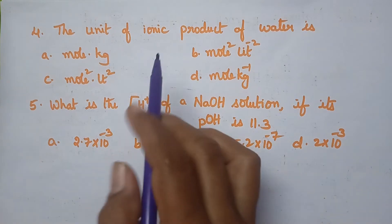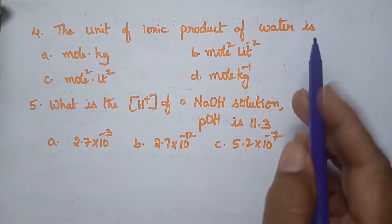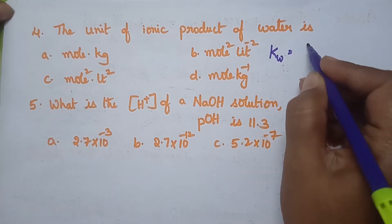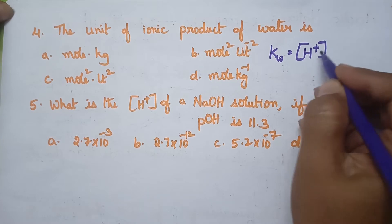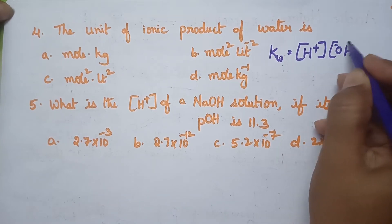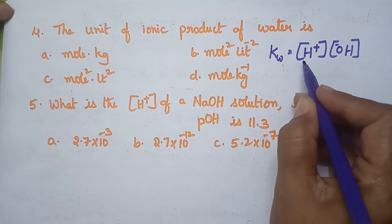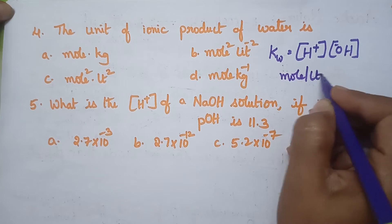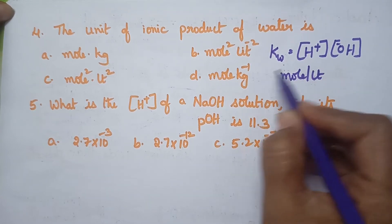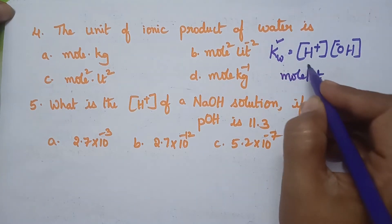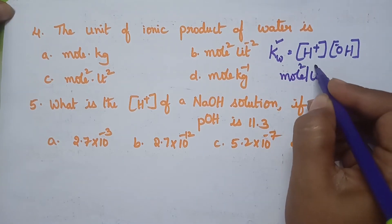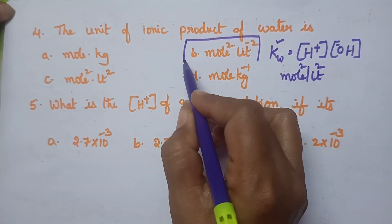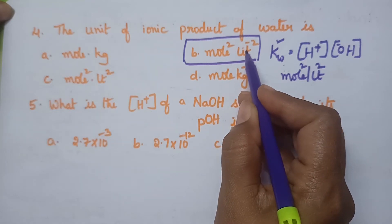The unit of the ionic product of water: the ionic product of water, Kw, can be written as the molar concentration of H⁺ and OH⁻ ions. The concentration of H⁺ can be expressed in terms of moles per liter. So the unit of the ionic product of water is mol² per L². In the given options, option B is the right answer: mol² per L².